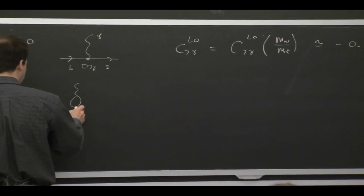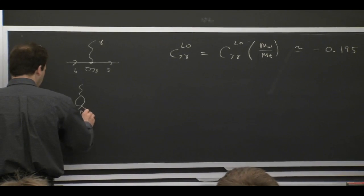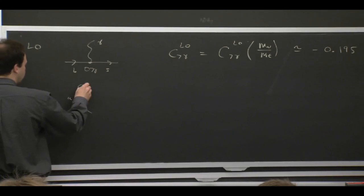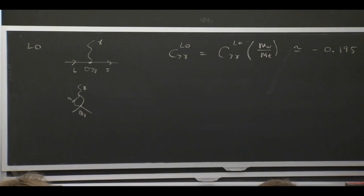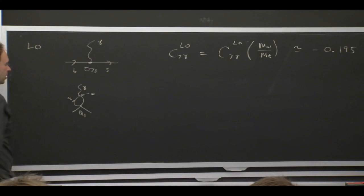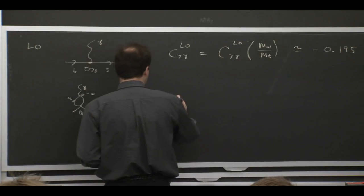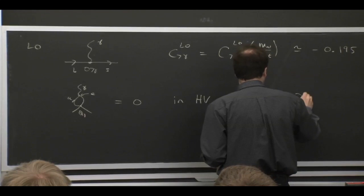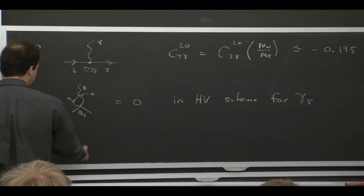And then you can start doing loop corrections. The first thing you might think about, which is actually not even suppressed by any factors of the coupling alpha strong, would be to just loop up the Q1 operator. You could just loop up the Q1 operator, contract the U U bar, and then you can get a β→s transition from this operator. So this is the U quark here, and then attach a photon. And there's no factor in that loop of the strong coupling, because this is an electromagnetic coupling. And this guy here is just this Q1 operator. So this doesn't look like it's loop suppressed relative to that. And this is a little subtle, but this guy actually is 0. So you have to use a good scheme for γ5. But it turns out to be 0.